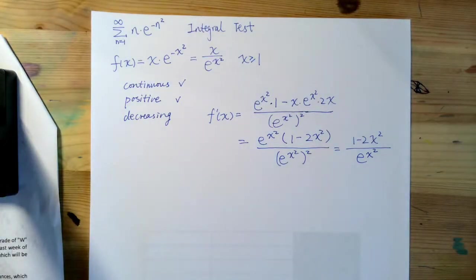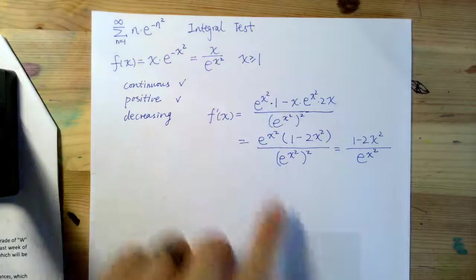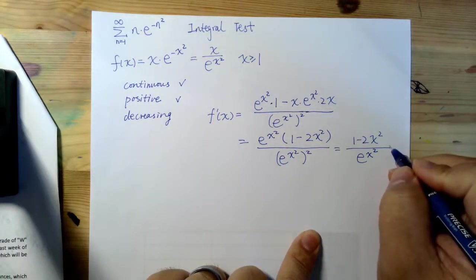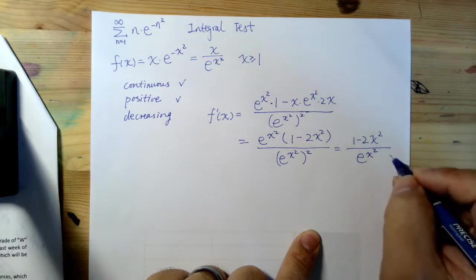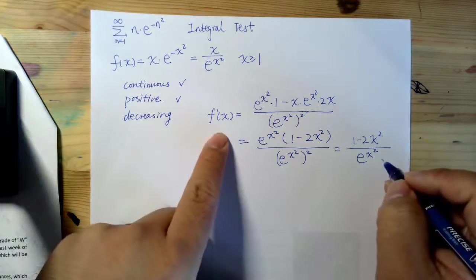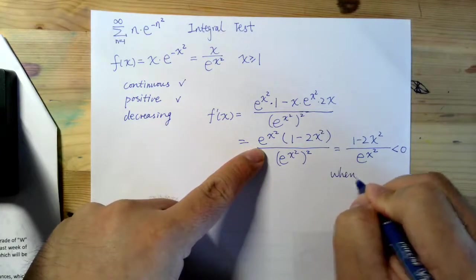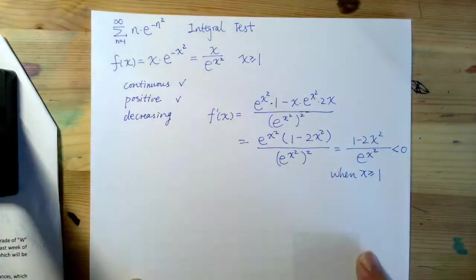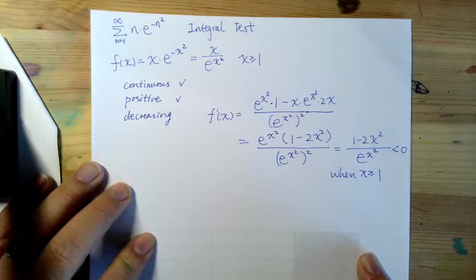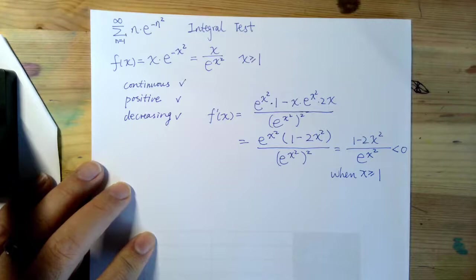And when x is greater or equal than 1 here, it is very obvious that this 1 minus 2x squared is going to be less than 0. So, it turns out the derivative of this given function is less than 0 when x is greater or equal than 1. That is true all the time. And so, that proves my function is decreasing.